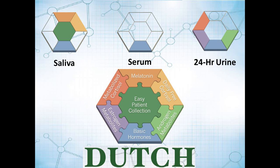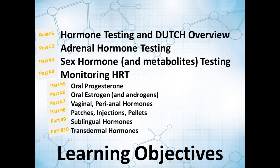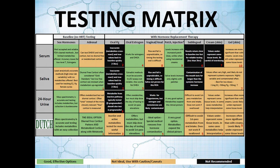As we go through this video series we'll be looking at adrenal hormone testing across all these different methods, then sex hormones and metabolites, and then the important topic of what the best way to test is for different supplementation scenarios. We'll be navigating this testing matrix — you'll get this as an actual file where you can click on different parts and look at the short videos relating to each topic, so you'll know which tools work well for a given situation.